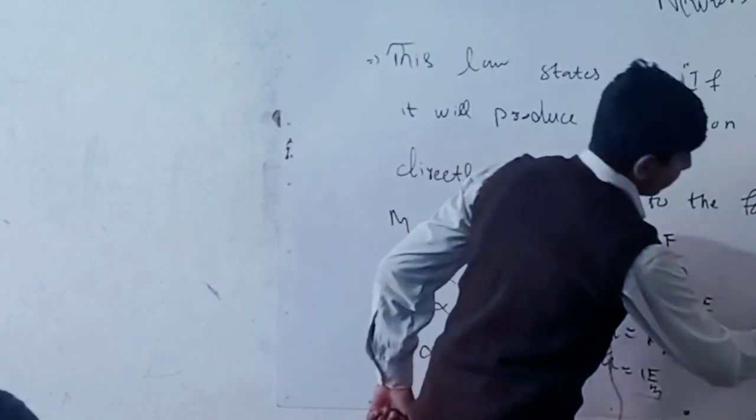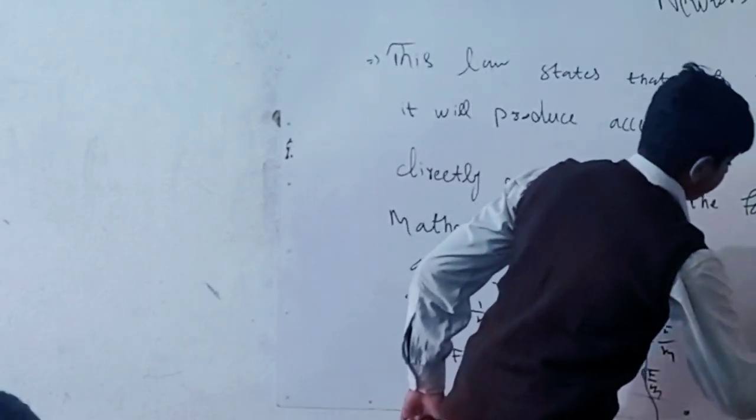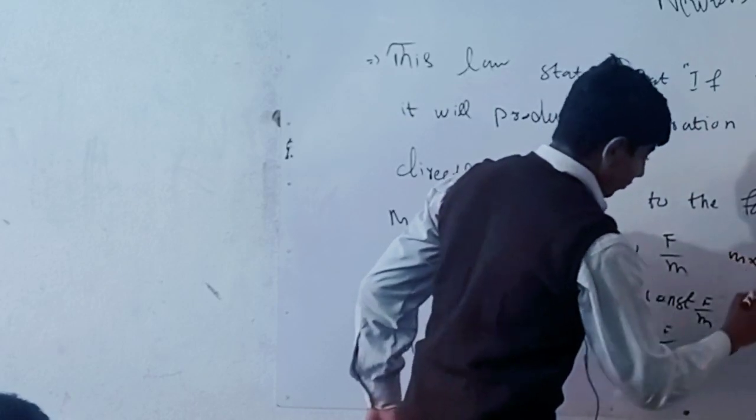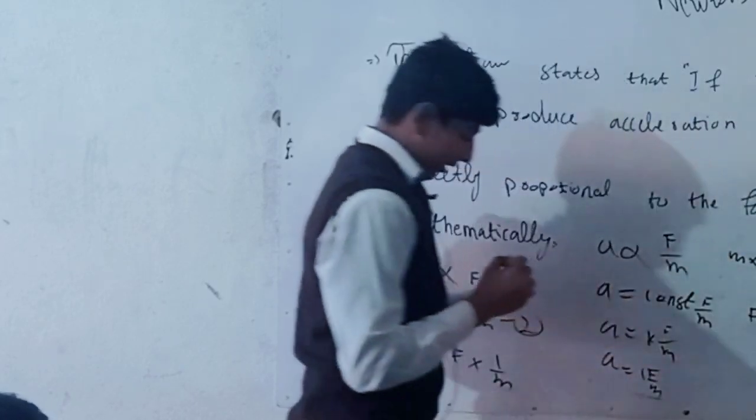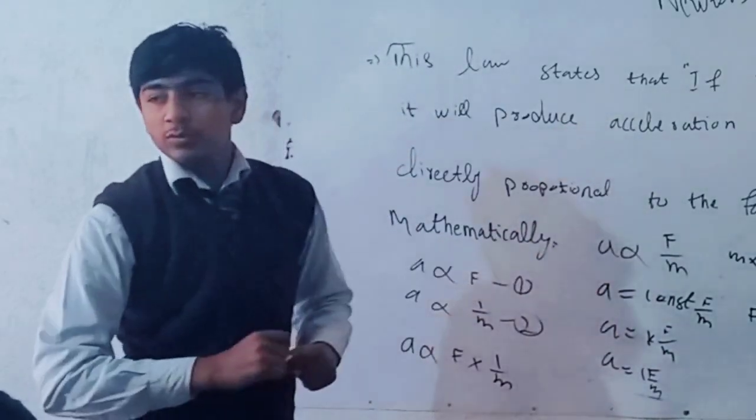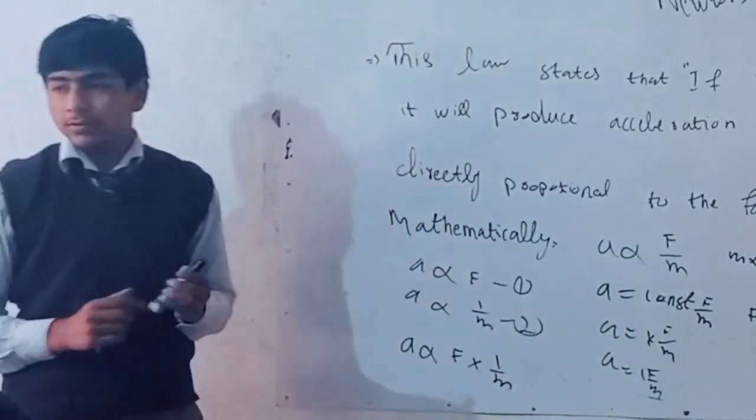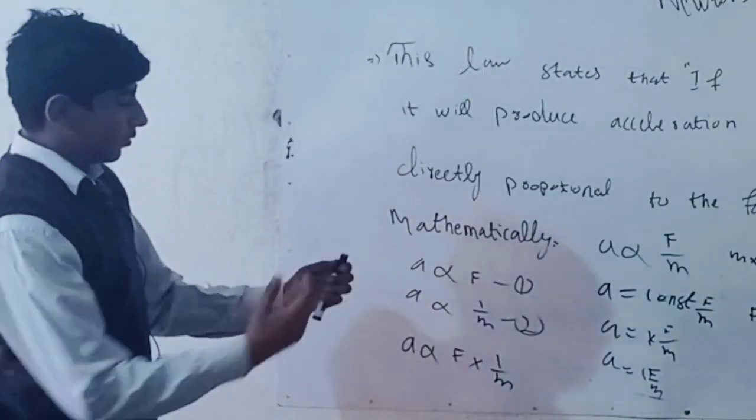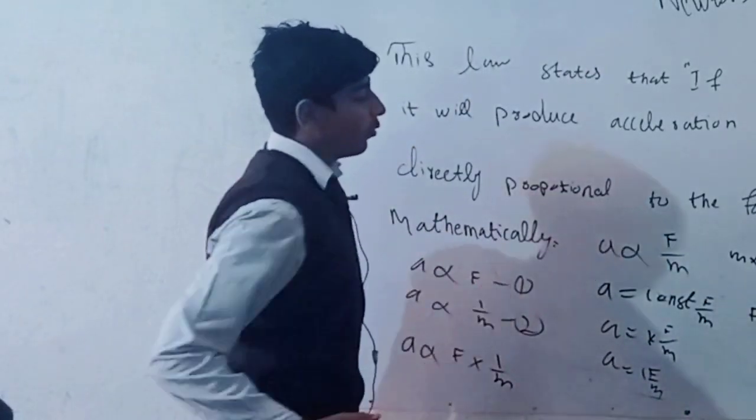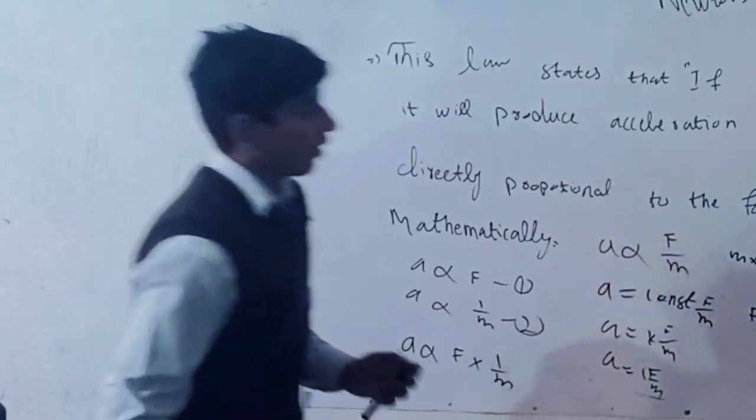give us acceleration is equal to F over M. So now if we try to find force, we will multiply M to both sides. So F will be given to us as M times a. Now this is the mathematical form of Newton's second law: F is equal to M times a. Now we have to show this mathematically proved equation through a diagram.